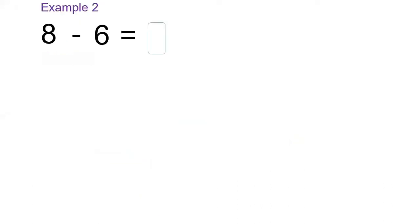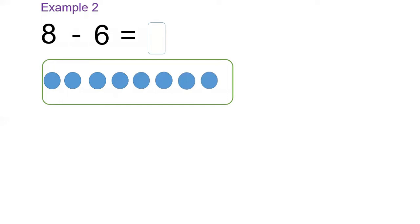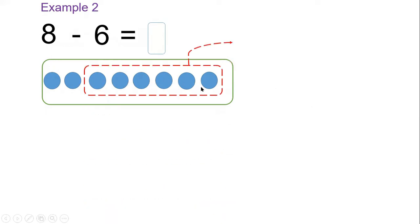Let's look at another example: eight minus six equals? Let's have eight dots — one, two, three, four, five, six, seven, and eight. Now I will take away six dots. You can see that we remain with two dots. So this means that eight minus six equals two.